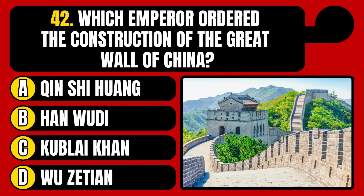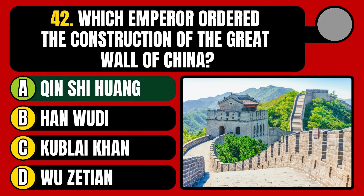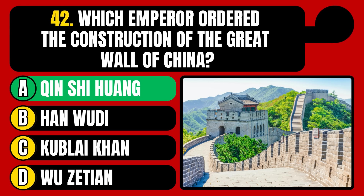Which emperor ordered the construction of the Great Wall of China? Qin Shi Huang, Han Wudi, Kublai Khan, or Wu Zetian? The correct answer is option A, Qin Shi Huang.